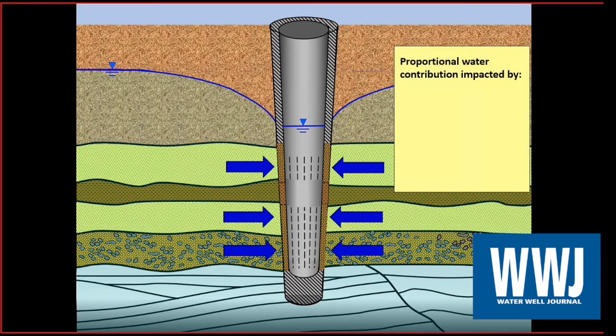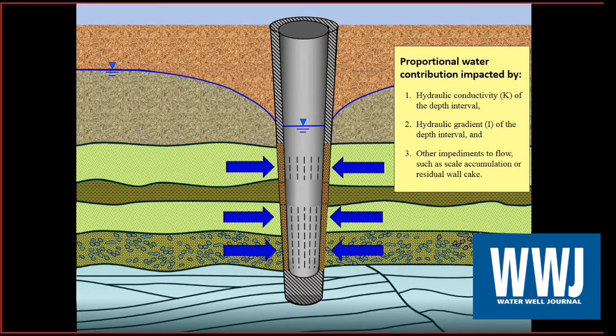We want to keep that in mind. So the potential water contributions is impacted by these variables of Darcy's law. The hydraulic conductivity, of course, is one, the gradient of each individual depth interval is one. And then there's other things, of course, we can have clogging in a specific depth interval, not throughout the entire screen. We can have a depth interval that had a biological clogging problem or a scale growth of some sort, or maybe the original wall cake was not fully developed. So there's a number of different things that can go on. They're hard to measure, but we know that they're out there in reality.